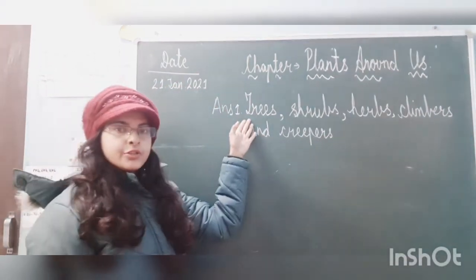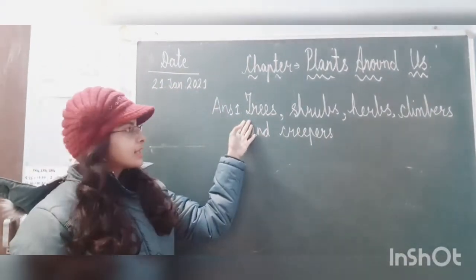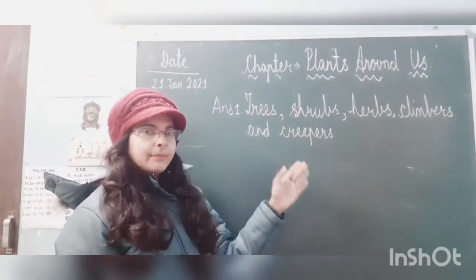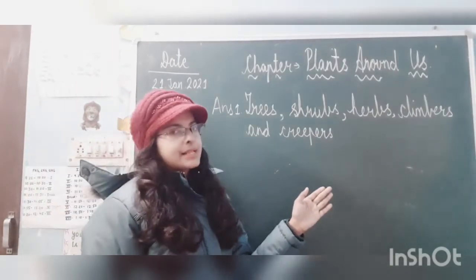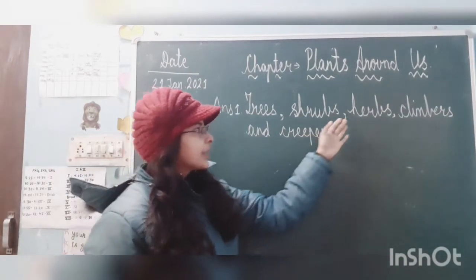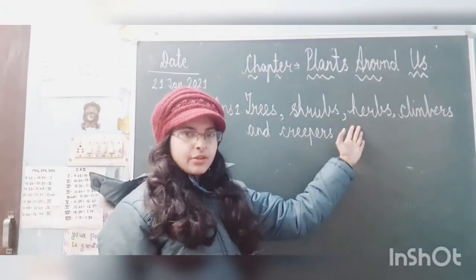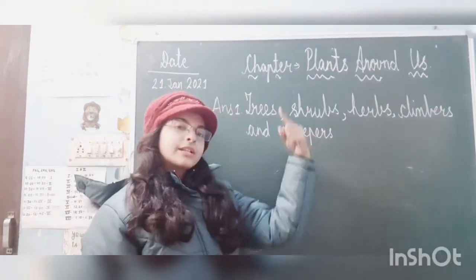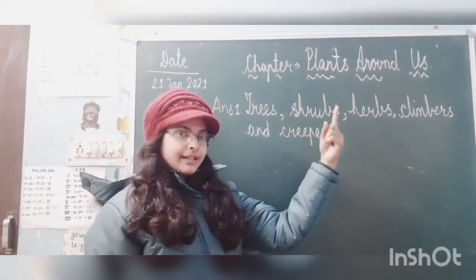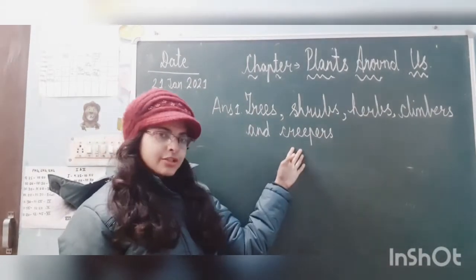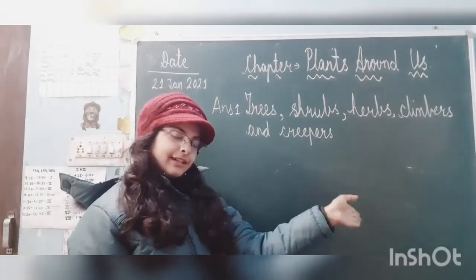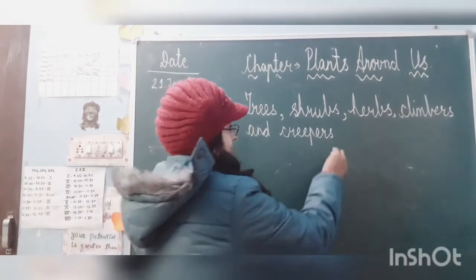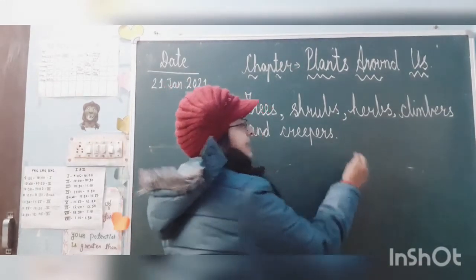Trees are big plants. Big and tall plants are called trees. Shrubs — the ones that creep along the ground are creepers. We call them creepers, and their fruits grow big.